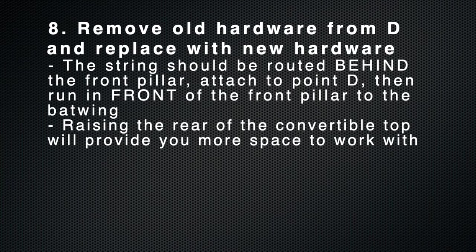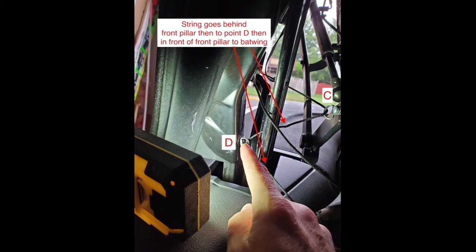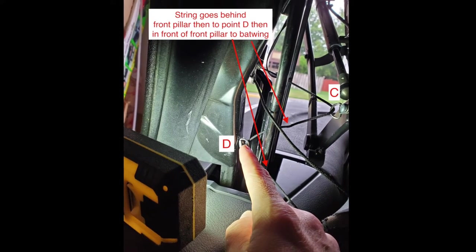For point D, again, the string routing is the most important piece. It should go directly from C, behind the front pillar, attach to D, and then be routed to the batwing itself.